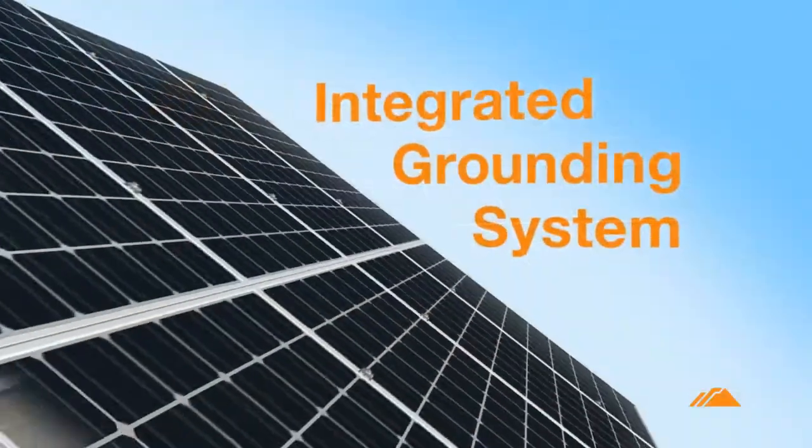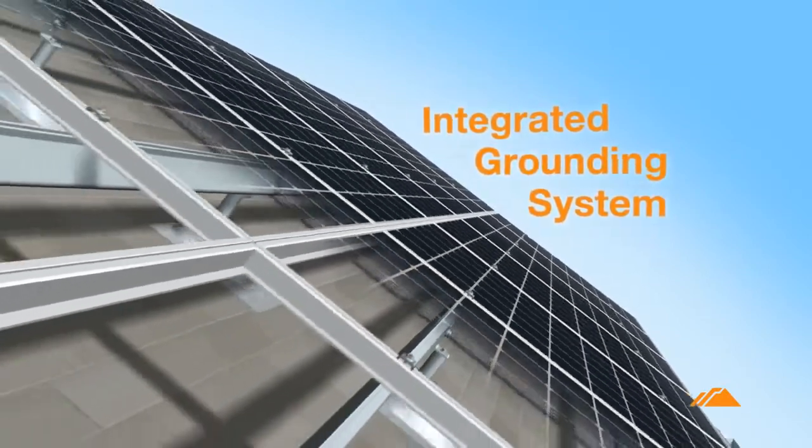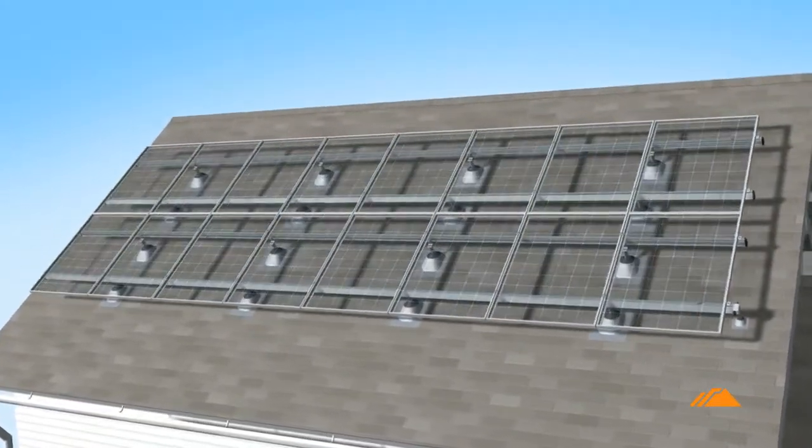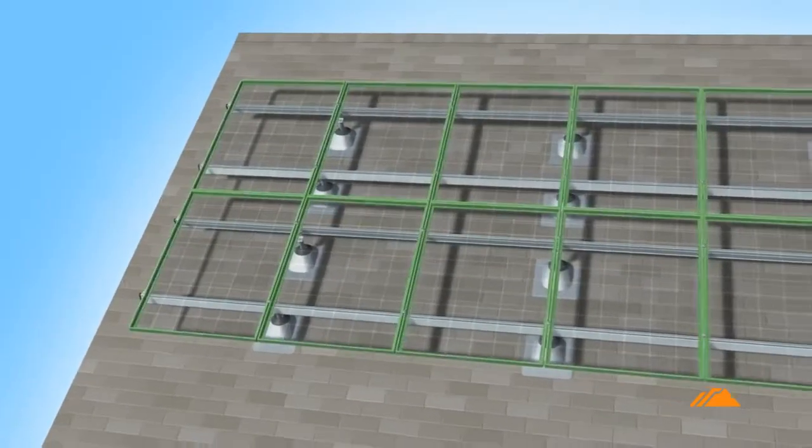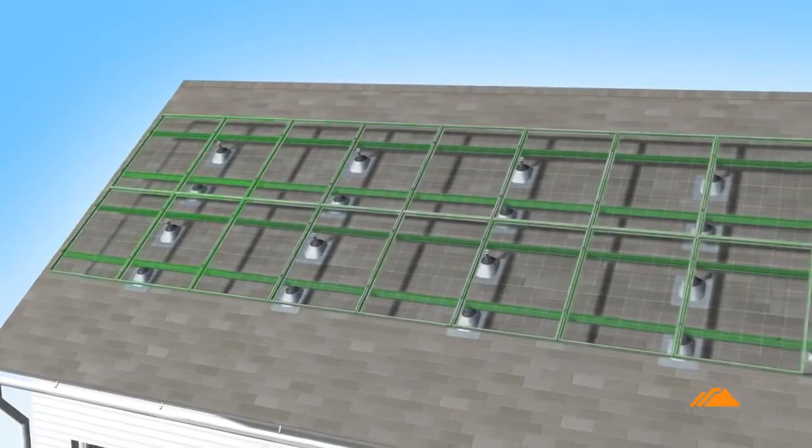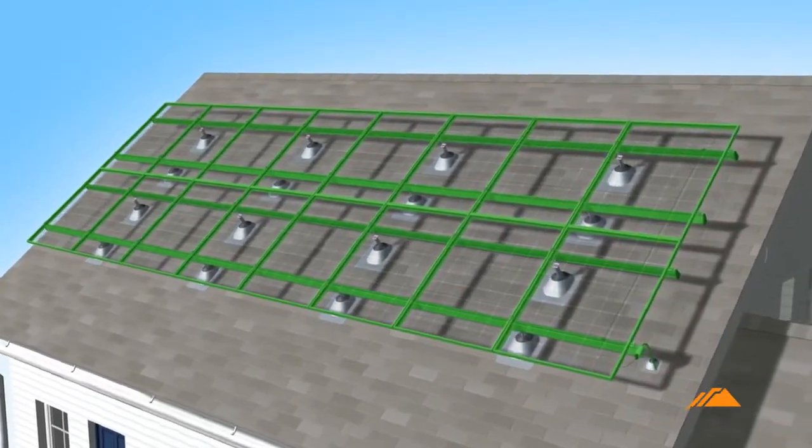Introducing the Iron Ridge Integrated Grounding System. Certified to UL2703, the Integrated Grounding System bonds solar modules directly to Iron Ridge rails. This eliminates the need for separate module grounding parts and procedures.